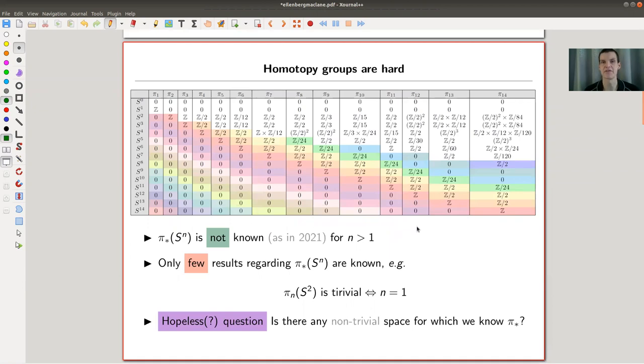So it all starts with the usual problem in homotopy: homotopy groups are just ridiculously hard. So here is my table - it's not my table, it's the table of the homotopy groups of spheres. In this direction you have the π_k's increasing and in this direction you have the S^n's. So if you would like to know something like π_9 of S^11 you would look here and you would see a zero. Very good.